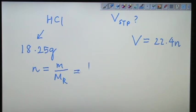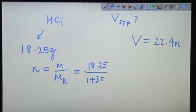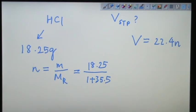So you will get 18.25 divided by 1 plus 35.5. I hope by now you will have memorized a few important relative molecular masses so they can use it as a molar mass. H is 1, Cl is 35.5. 18.25 divided by 36.5, that will give you 0.5 mole. Please remember that all this interconversion is possible because you do it step by step.